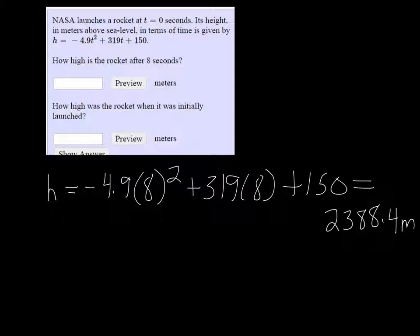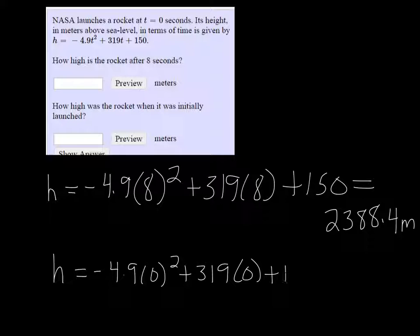The second one is how high was the rocket when it was initially launched? So at time 0, if we put 0 in for t, the first two terms just go to 0, the only thing left is 150, so 150 meters is where the rocket started.